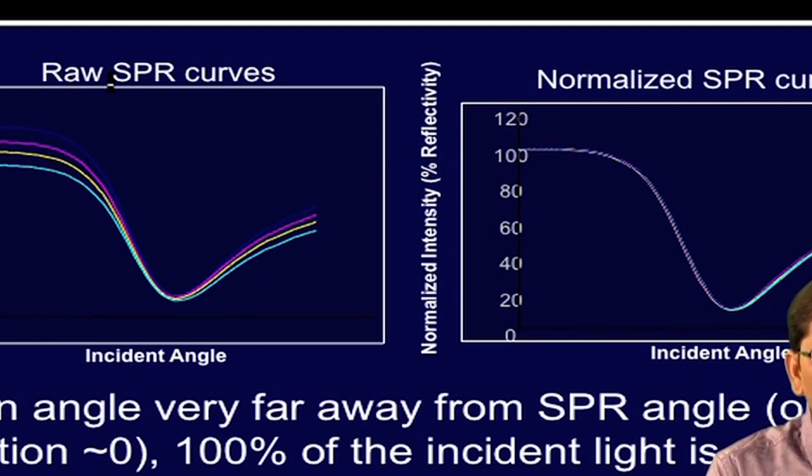Now, the 100 percent reflectivity can be used to normalize the reflected light intensity to ensure that all features have uniform sensitivity.